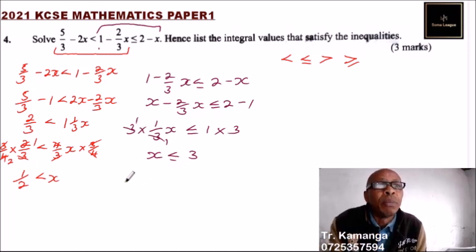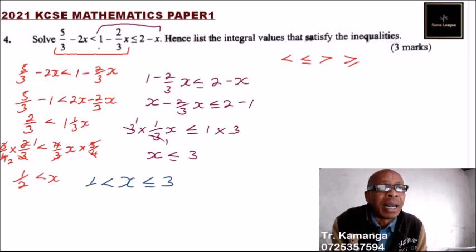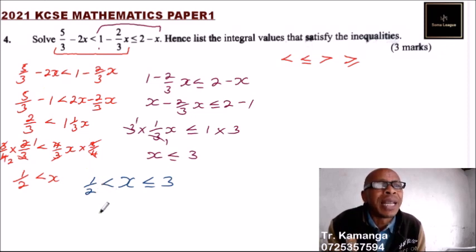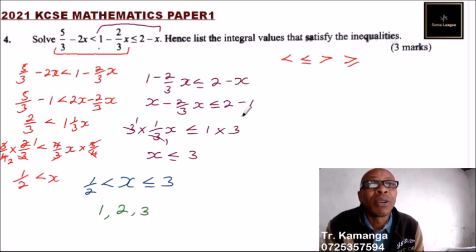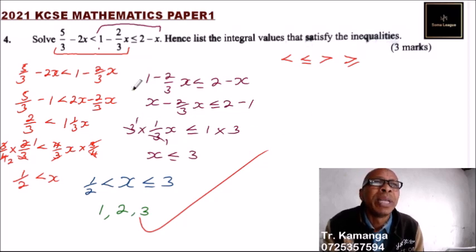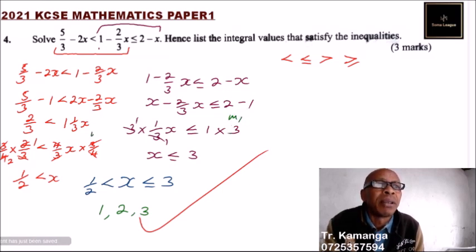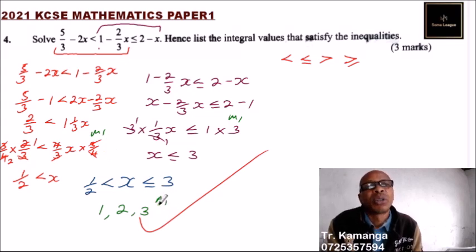We combine the two results: x is less than or equals to 3, and x is greater than one half. Since x is greater than one half, the next integer value is 1. Also 2 is part of the range. Because x is less than or equals to 3, and there is an equals sign, 3 also qualifies. So the integral values are 1, 2, and 3. This gives 3 marks — a method mark for each part and one mark for the answer.